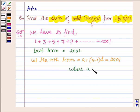a is the first term of this sequence, n is the number of terms, and d is the common difference.